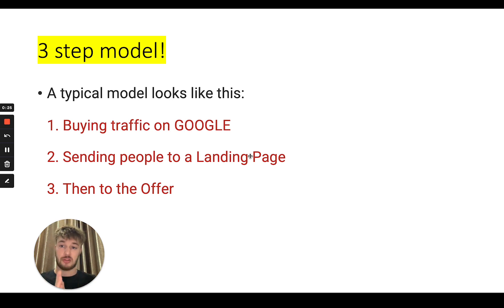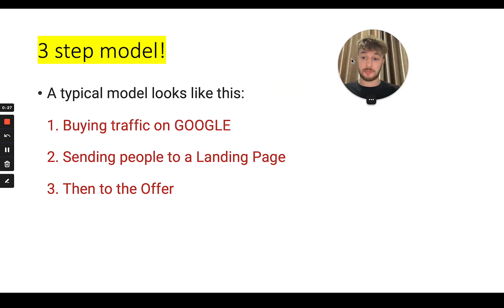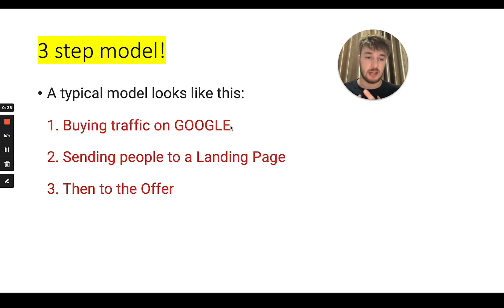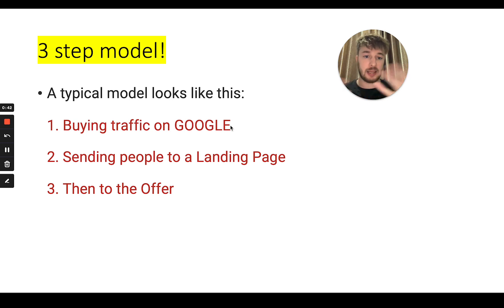So let's go straight into it. As you can see on my screen, we have the typical traffic system, which works like this. First, we buy traffic or buy ads — media buying on Google. Then we send people to the landing page or the blog, and then they go to the affiliate link and buy the offer. So that's a three-step simple method.